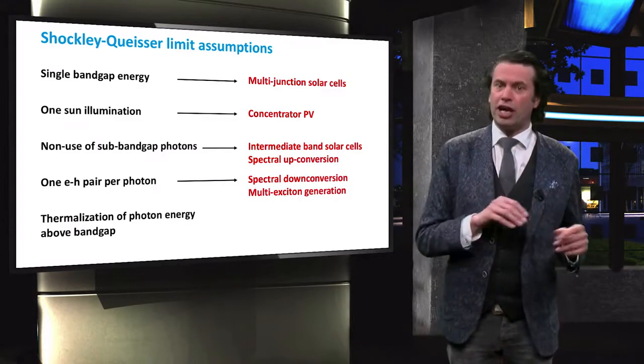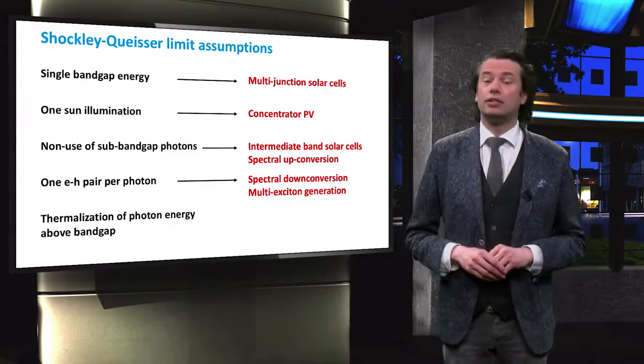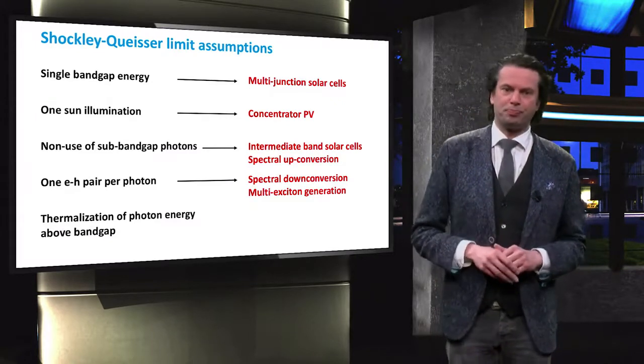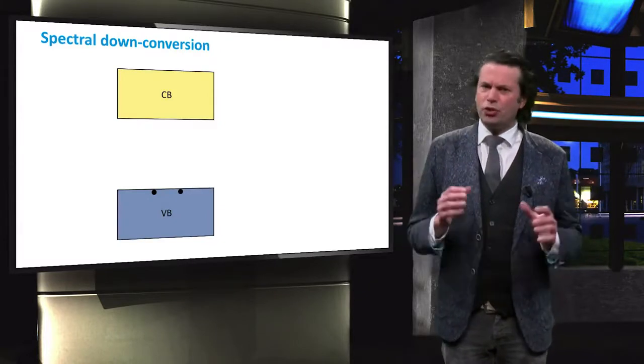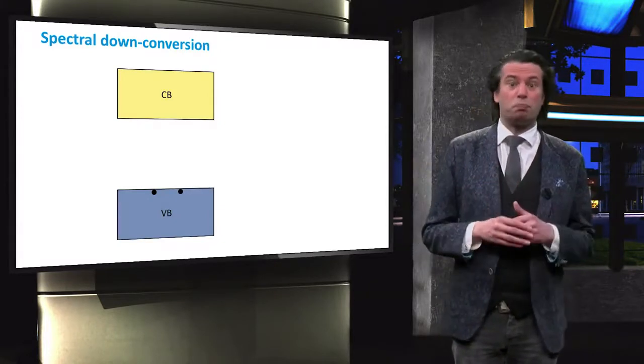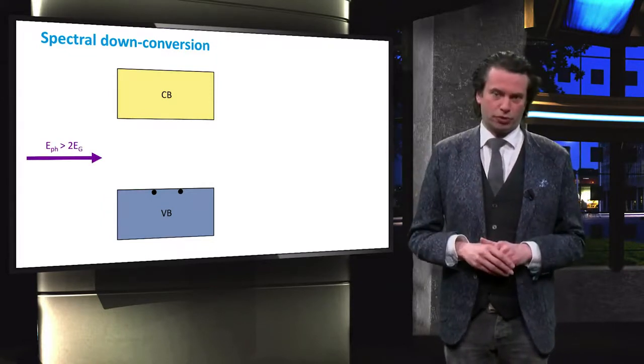Spectral downconversion and multiple exciton generation are two concepts that challenge this assumption. The idea of spectral downconversion is to use an additional layer to split one high energy photon into multiple low energy photons.